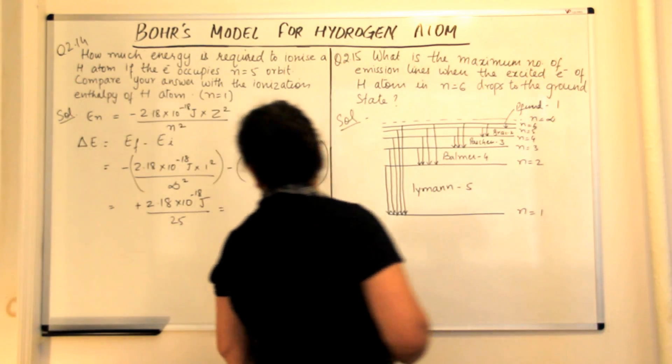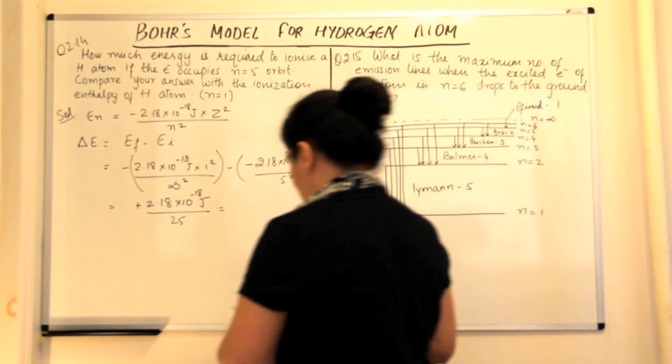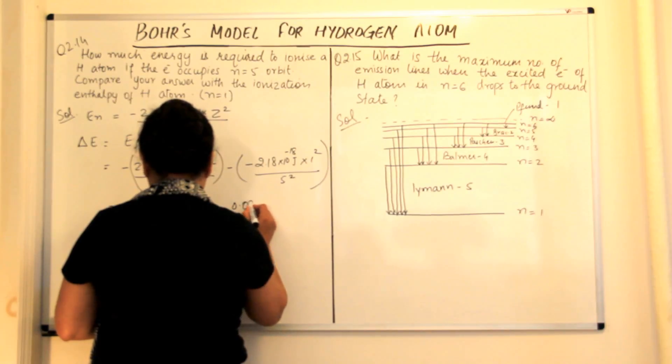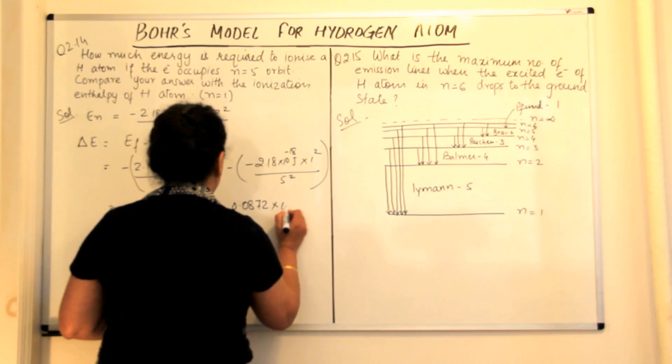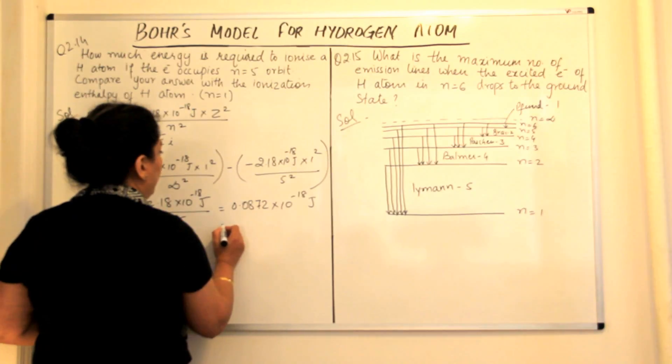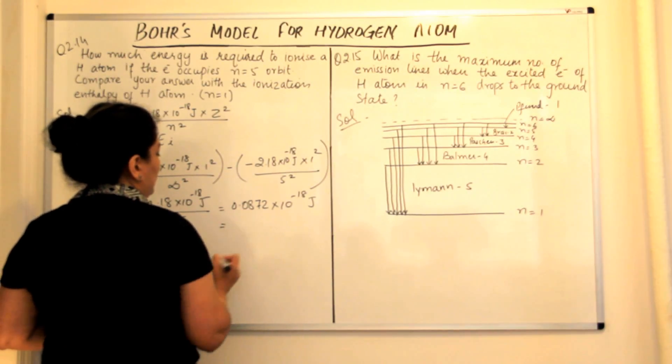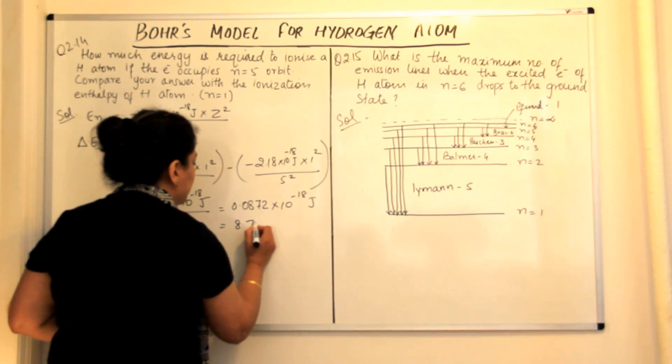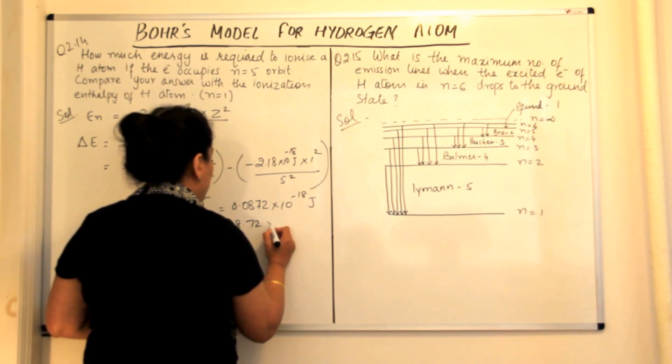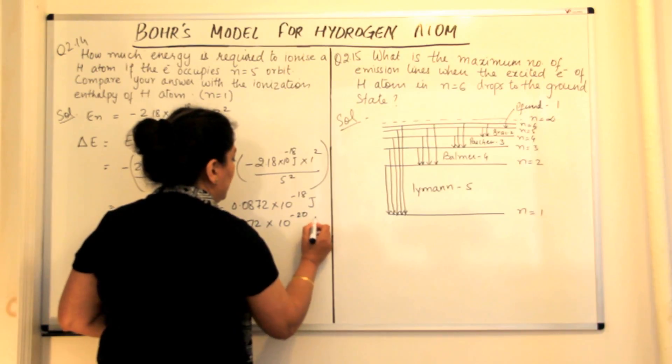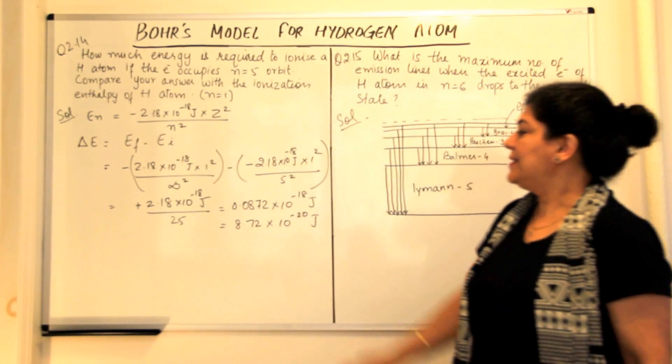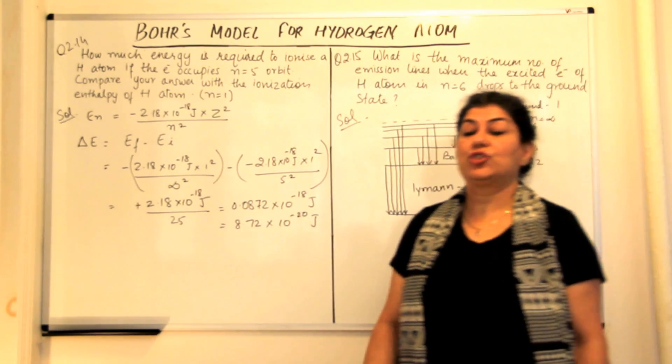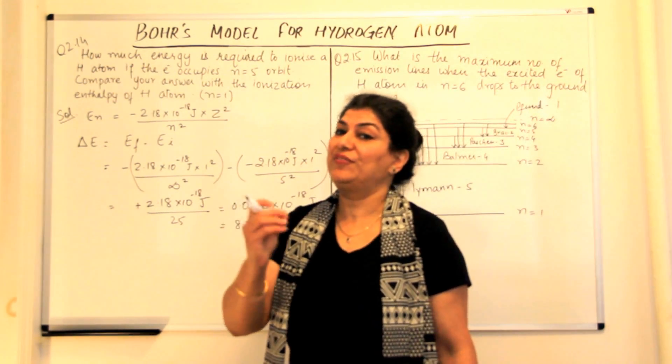So if you calculate, it becomes equal to 0.0872 into 10 to the power minus 18 joules. Or if you take care of the scientific notation, this would be 8.72 into 10 to the power minus 20 joules. So this is the energy required to ionize hydrogen when the electron is present in the fifth shell.